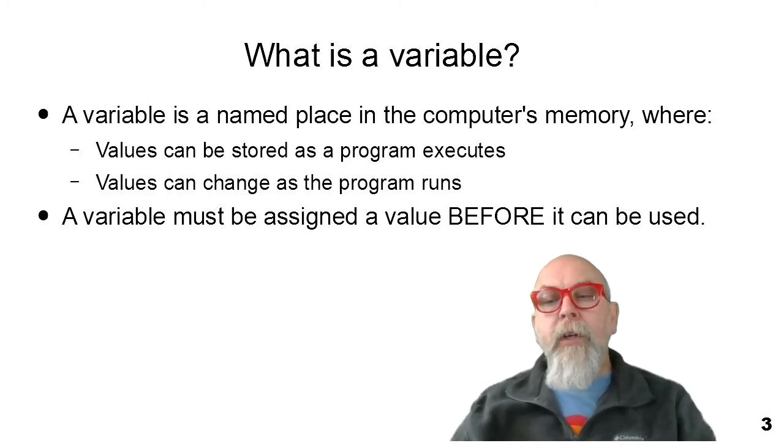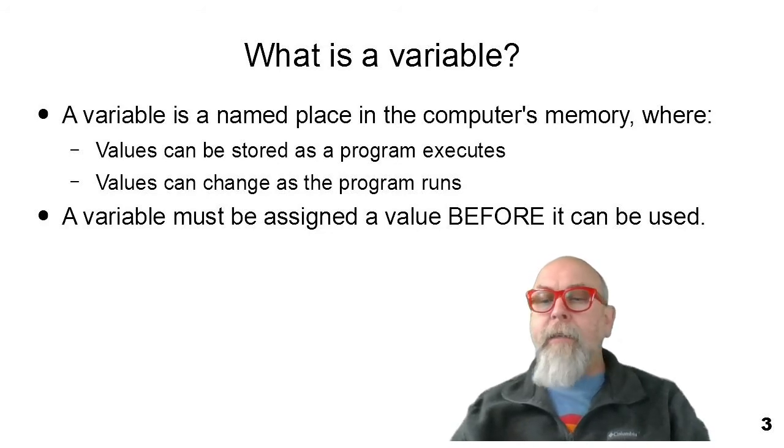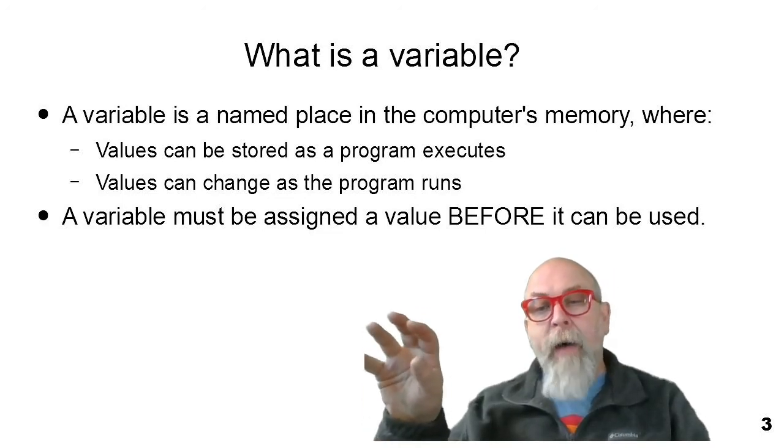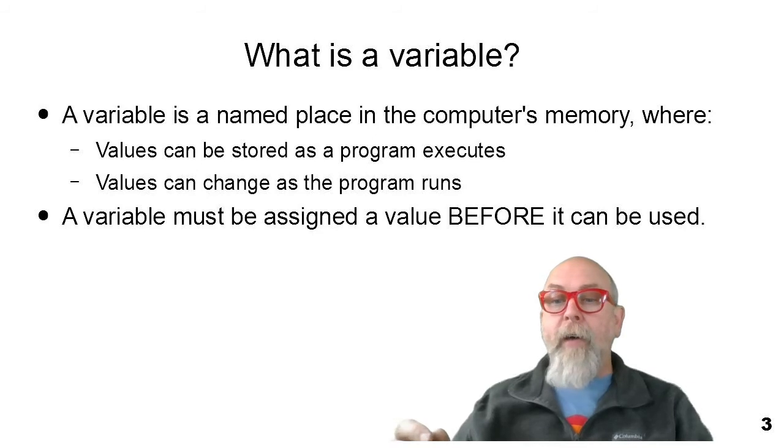To start this presentation, let's talk about what is a variable. A variable in a computer programming language is a little different than a variable in a mathematical expression, but it has a lot of similarities. A variable basically is a label that's assigned to a spot in the computer's memory. This spot in the computer's memory is where we can store values as the program is executing. And the program can access that spot in the computer's memory and change the values or update the values as the program runs.